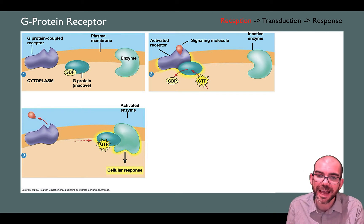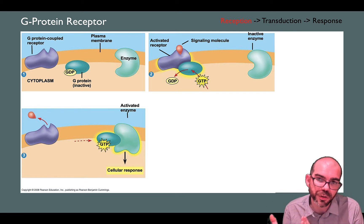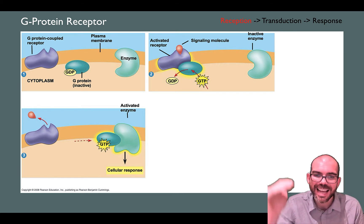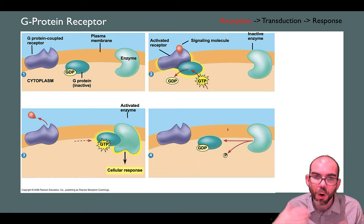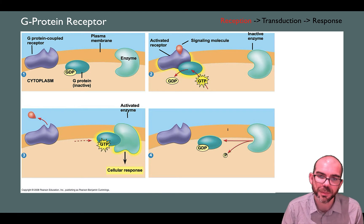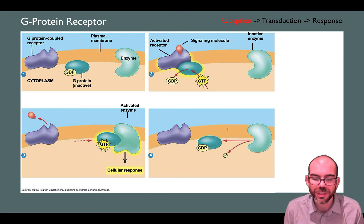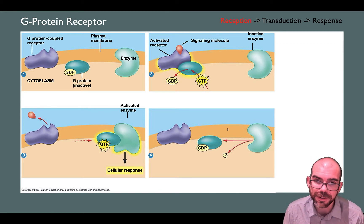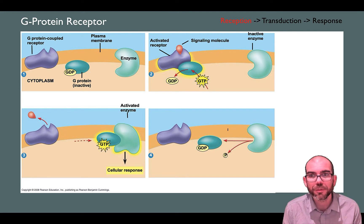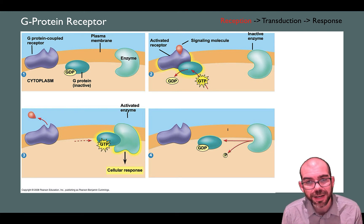That now-activated enzyme on the surface of the cell membrane then triggers transduction and response. Once that process has occurred, the entire system resets. The ligand is now gone and the G protein has a GDP because it's used up that phosphate from the GTP. This type of receptor is seen most often with bacteria.